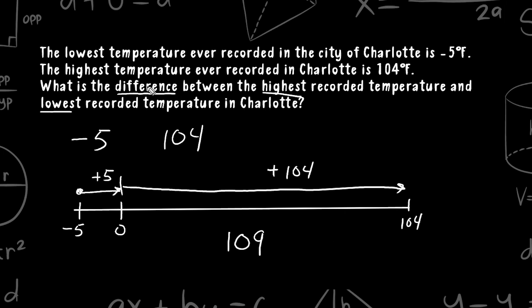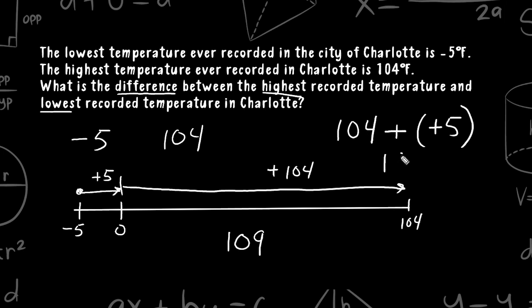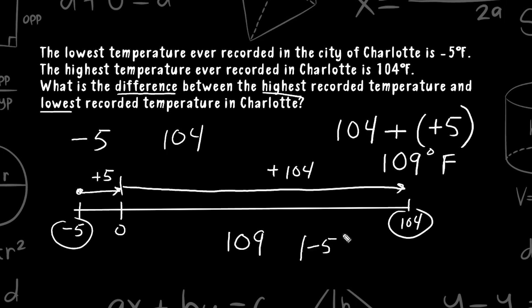When we see the word 'difference,' that indicates subtraction, so another way to solve this is by writing 104 minus negative 5. When you subtract a negative, you turn those signs positive, so really we have 104 plus 5, which is 109. Whenever you find the distance between a negative value and a positive value, the shortcut is to take the absolute values of both numbers and add them together. The absolute value of negative 5 plus the absolute value of 104 gives us 109 degrees Fahrenheit — the difference between those two temperatures.